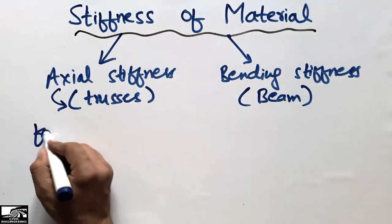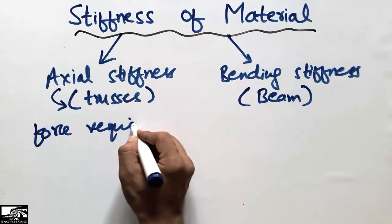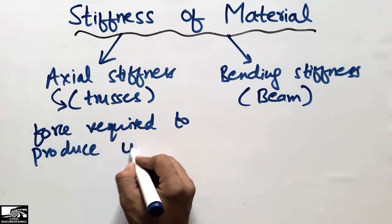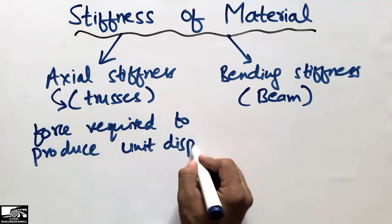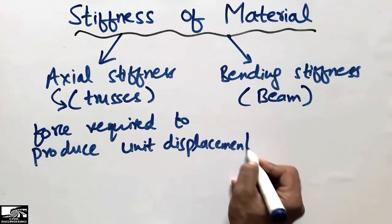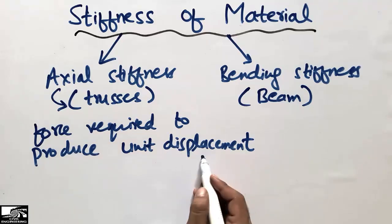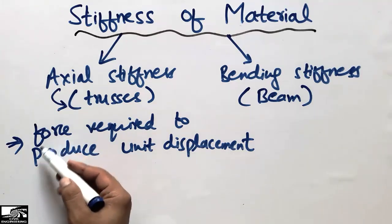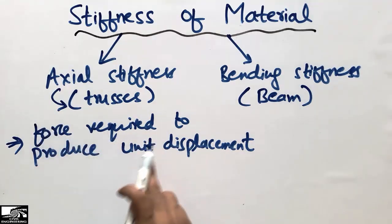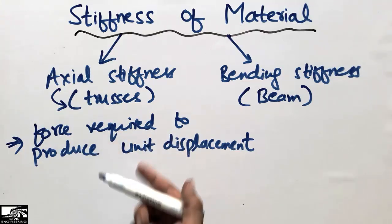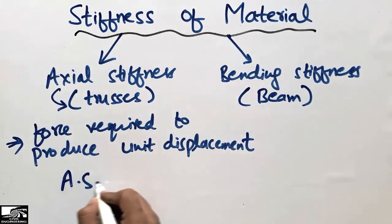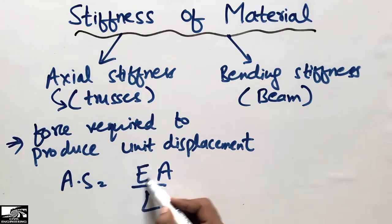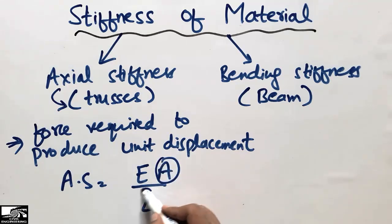Axial stiffness can be defined as the force required to produce unit displacement. It may be a compressive force or a tensile force, but it must produce unit displacement. The formula for axial stiffness is EA divided by L, where E is the modulus of elasticity, A is the area of the cross-section, and L is the length of the member.